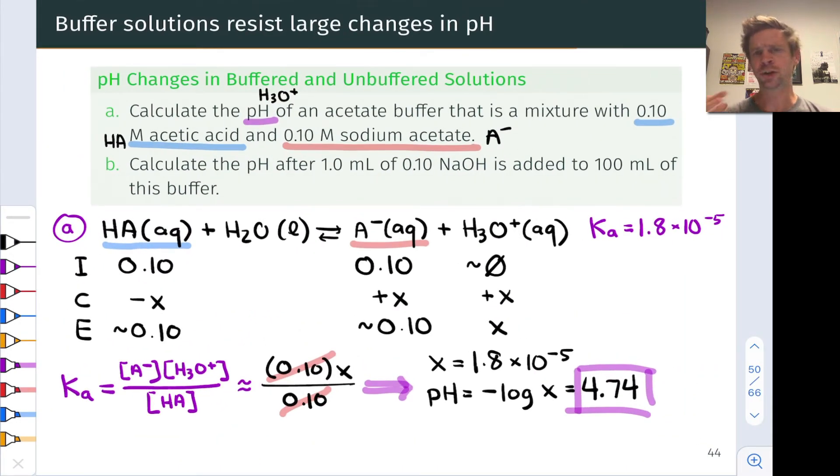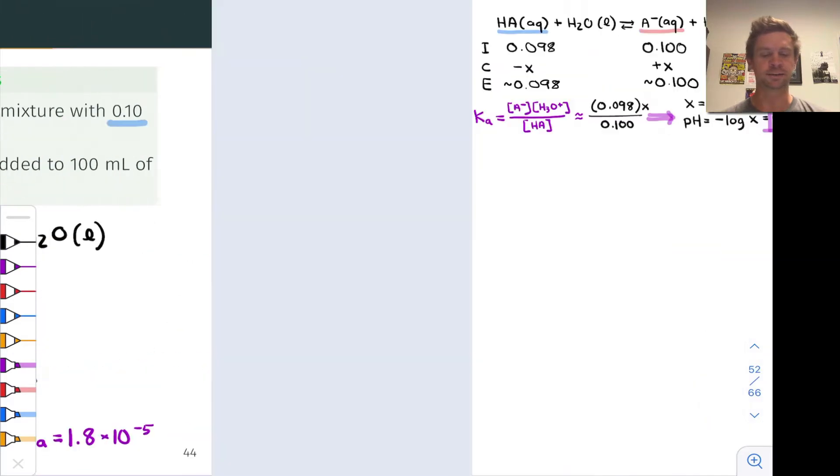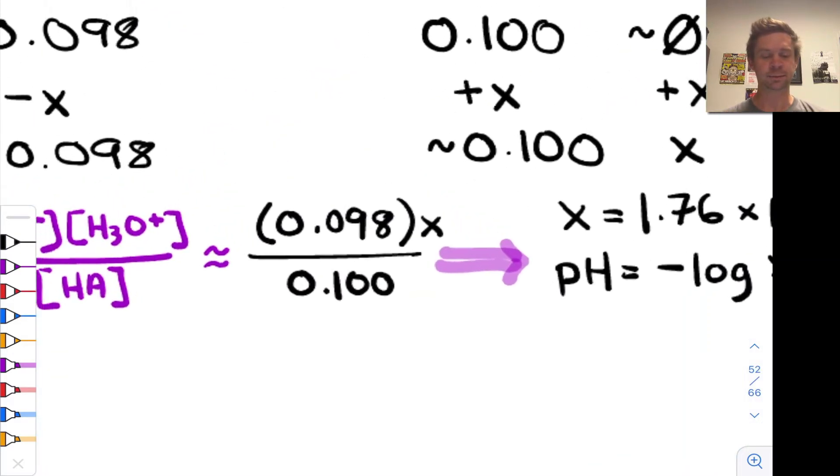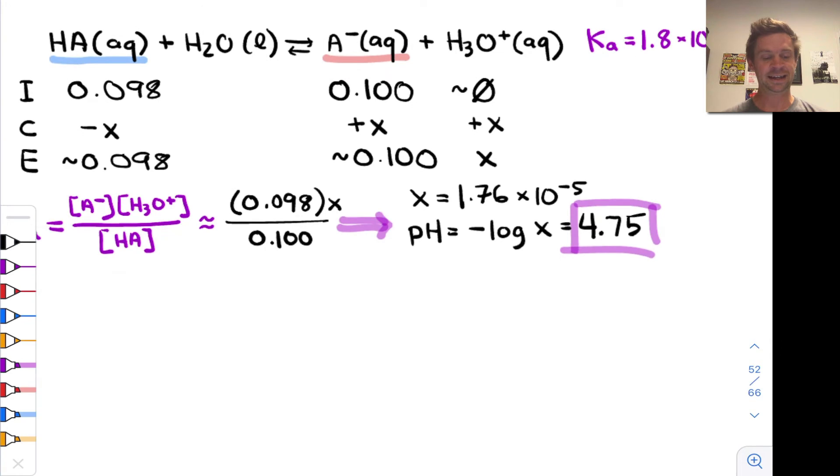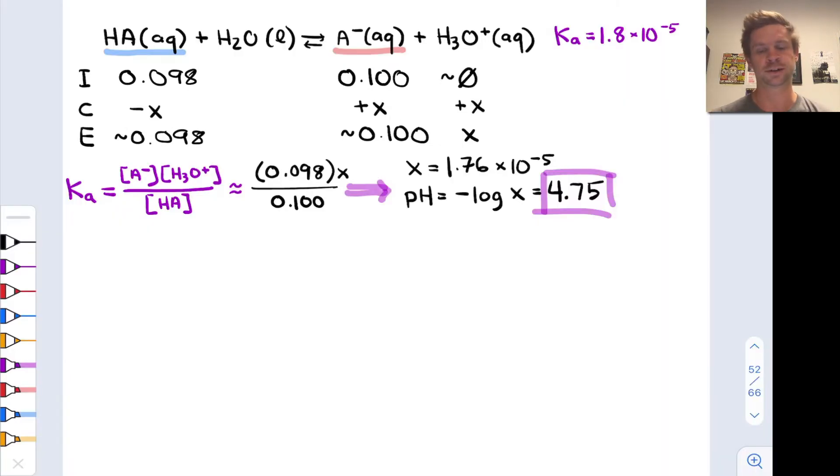So we were able to just use the initial concentrations here on the equilibrium line of the ice table. In fact, something similar happened in part B. We found these initial concentrations after the action of the strong base, hydroxide, 0.098 molar for HA and 0.1 molar for A-, and then in the ensuing ice table, we were able to once again assume that the equilibrium concentrations of HA and A- were pretty close to the initial concentrations. In other words, X is small relative to these initial concentrations.